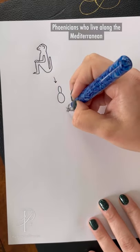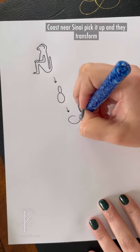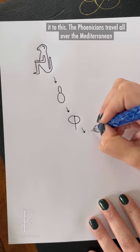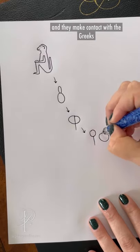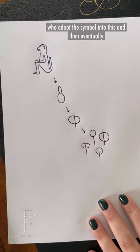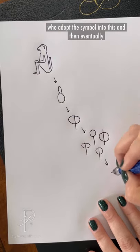The Phoenicians, who live along the Mediterranean coast near Sinai, pick it up and they transform it to this. The Phoenicians travel all over the Mediterranean and they make contact with the Greeks, who adopt the symbol into this, and then eventually into this.